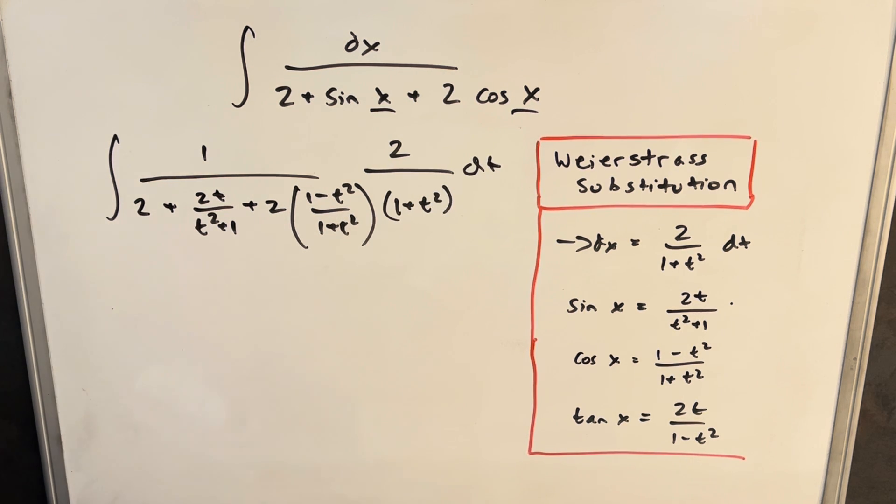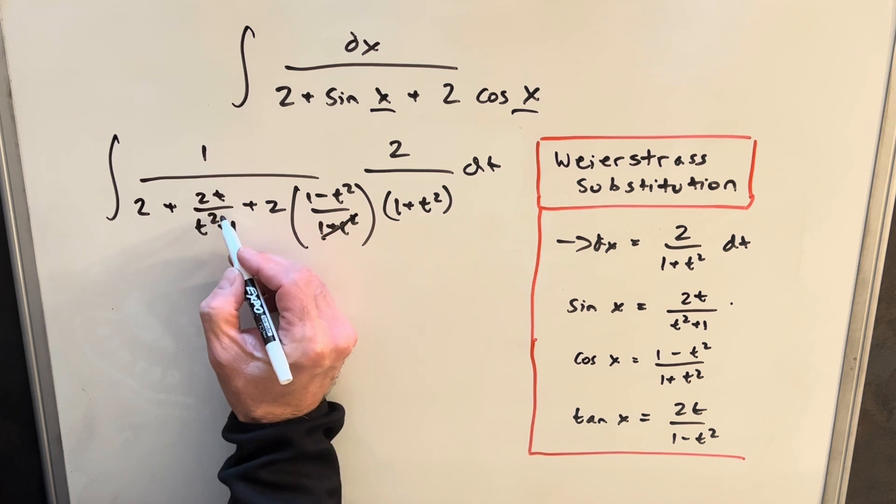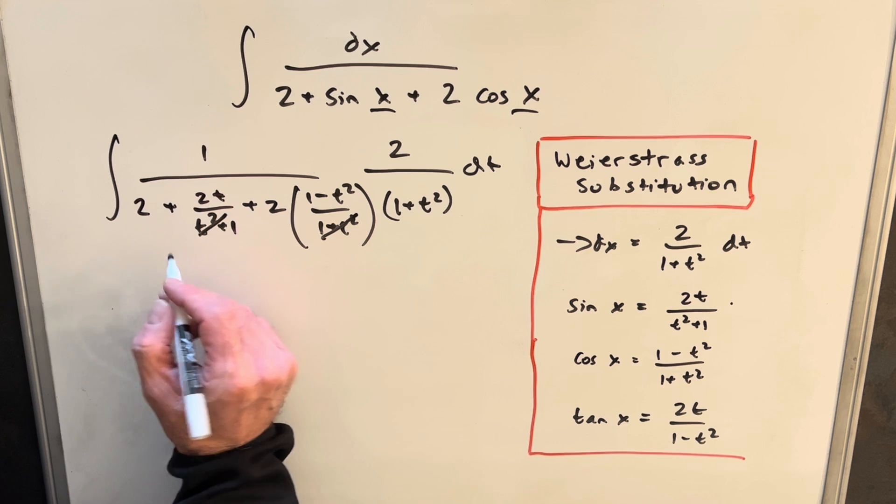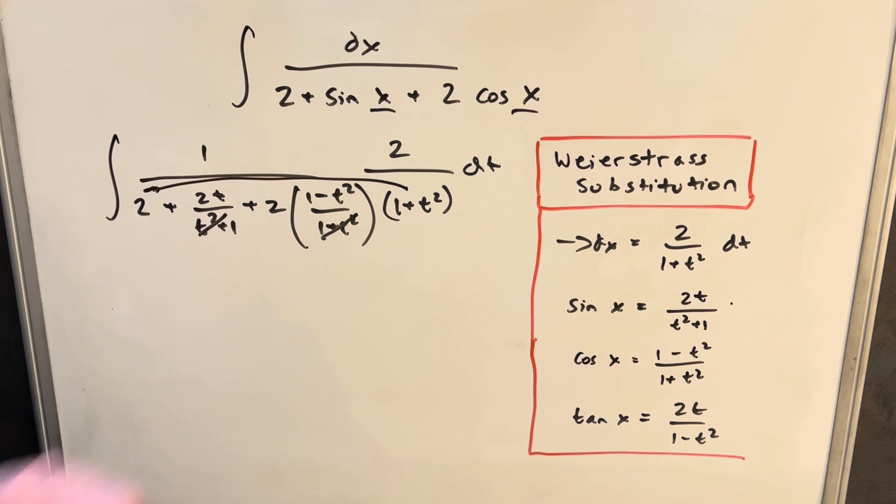The reason why these work out pretty nice sometimes is because we get a cancellation with this 1 plus t squared here. And then we just need to distribute it to this first term. So let's rewrite this.